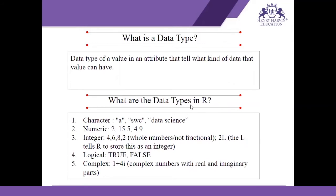There are different kinds of data types in R. First is character, which means alphabetical form — it can be a single letter or a group of letters, like A, or a group of letters like a name or address. Numeric data type means it can be a whole number, a fraction, or a decimal.